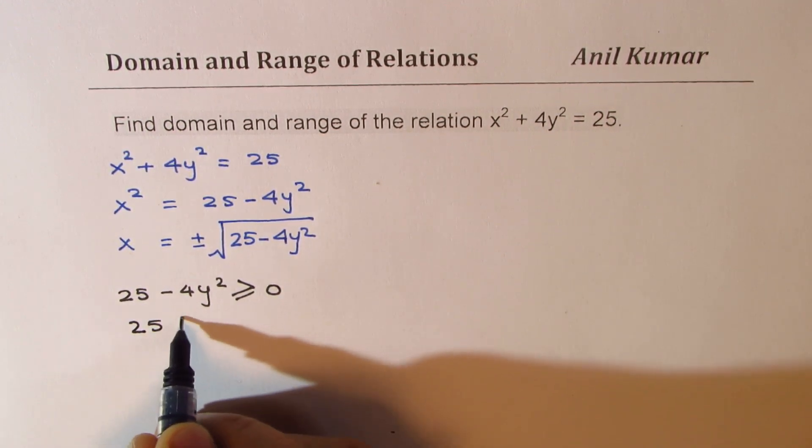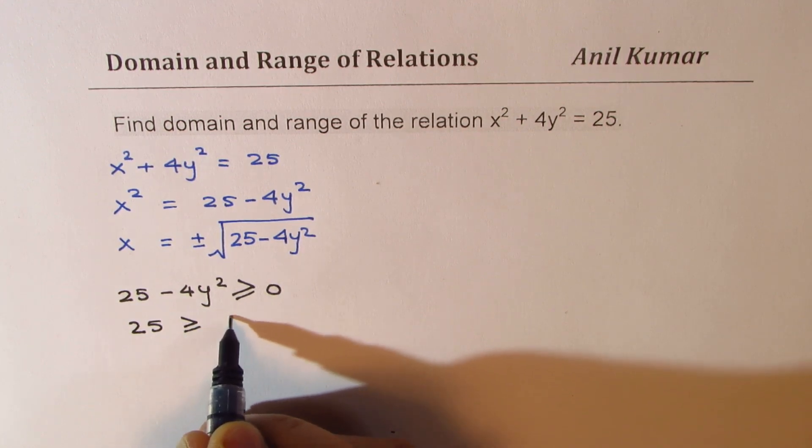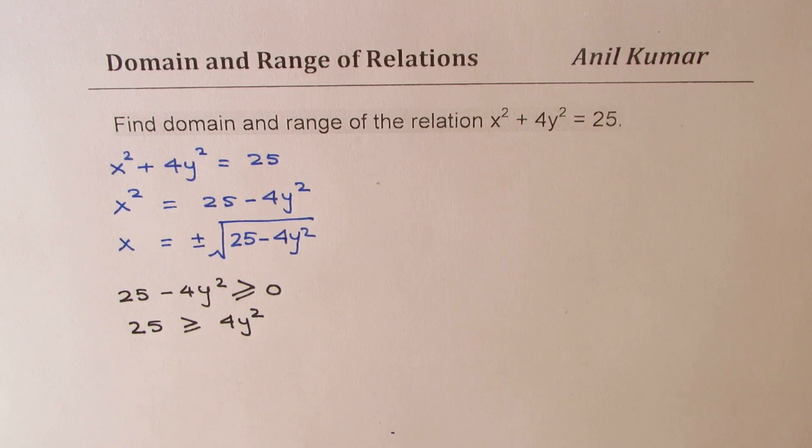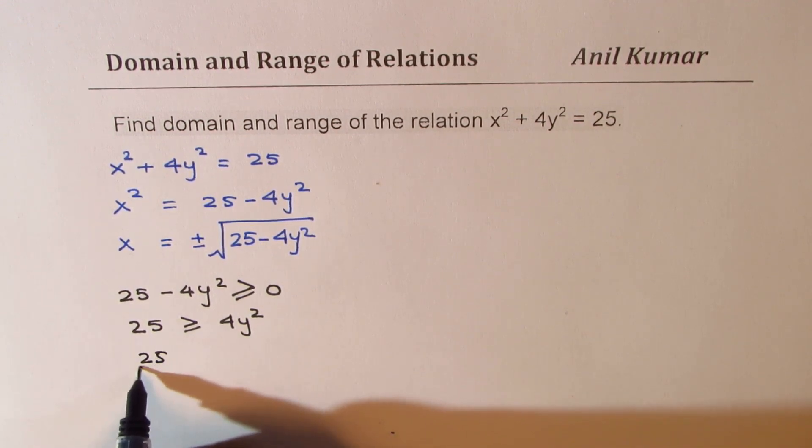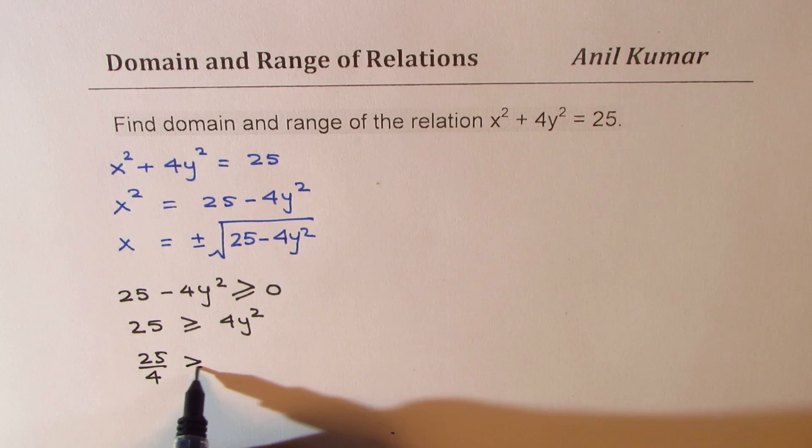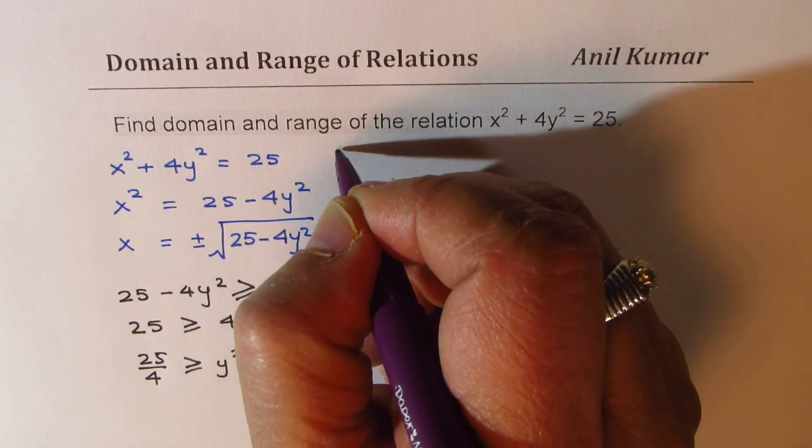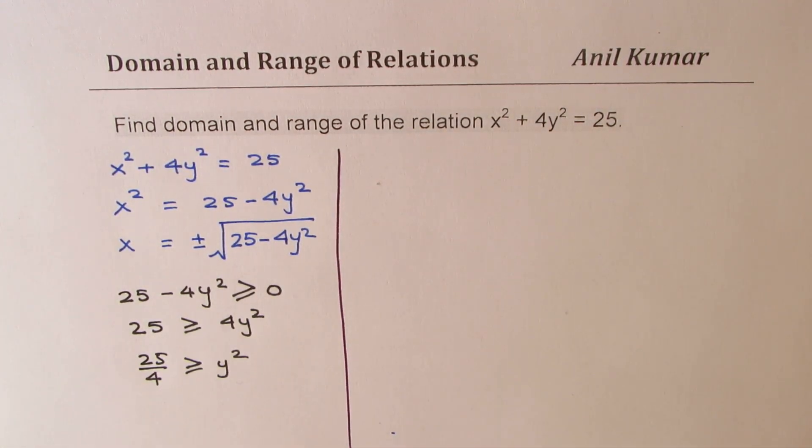Or we can say that 25 should be greater than or equal to 4y². We can divide by 4, so we get 25/4 ≥ y². Now from here, how do you find restrictions on y?